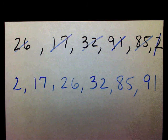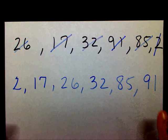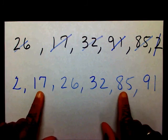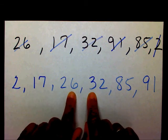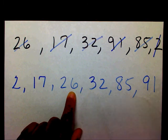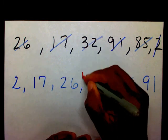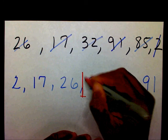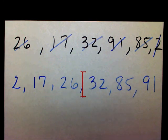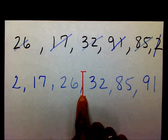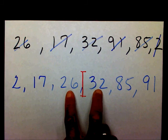Now that the numbers are in order, I need to find the number in the middle. But I don't have one number in the middle — I need to find what number is right here between 26 and 32. If you remember from the mean video, in order to find this number we need to find the average of these two numbers.